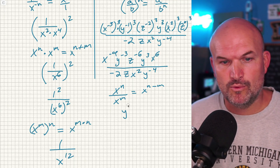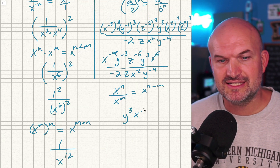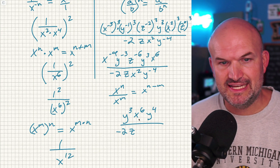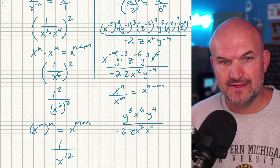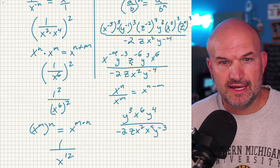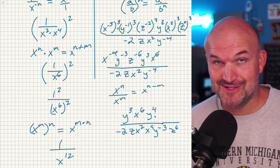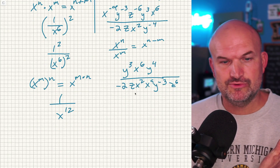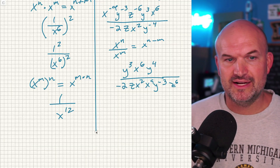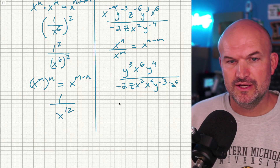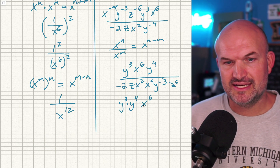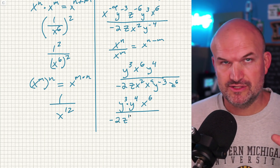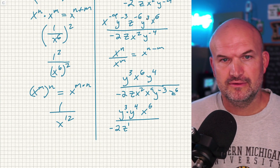So the only thing left in the numerator would be y cubed and x to the sixth. And since x to the negative ninth is negative, I can put that in the denominator to make it positive. In my denominator I have negative two, z, x squared. Then I'll bring down x to the ninth and y to the negative third. And z to the positive sixth. Now in the numerator I can rearrange — since multiplication is commutative — putting y cubed times y to the fourth times x to the sixth. In the denominator, putting the z's next to each other and x's next to each other: negative two, z to the first power, z to the sixth, x squared, x to the ninth, and y to the third.